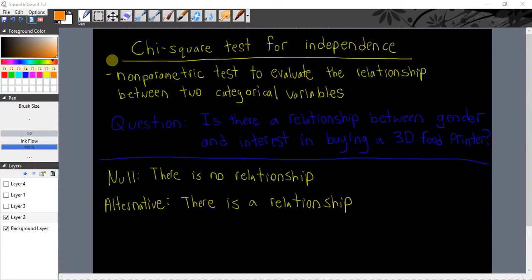You'll remember from your classes, this is a non-parametric test to evaluate the relationship between two categorical variables. The question for this example today is, is there a relationship between gender and interest in buying a 3D food printer? Or in other words, is there a difference between males and females with regards to interest in buying a 3D food printer?